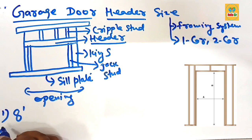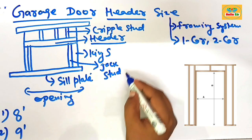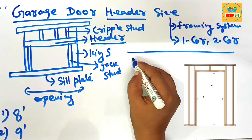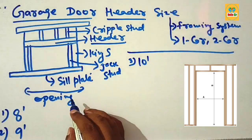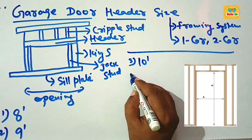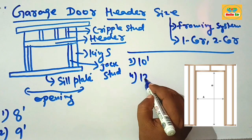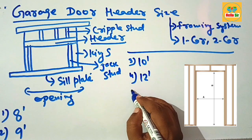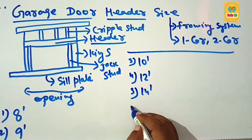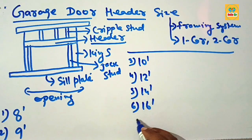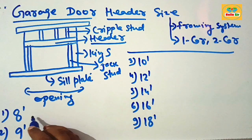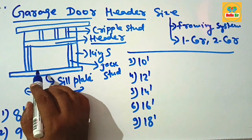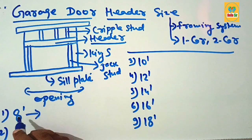The opening for a single car garage door will be 8 foot, 9 foot, and 10 foot. For a double car garage door, the opening will be 12 foot, 14 foot, 16 foot, and 18 foot.